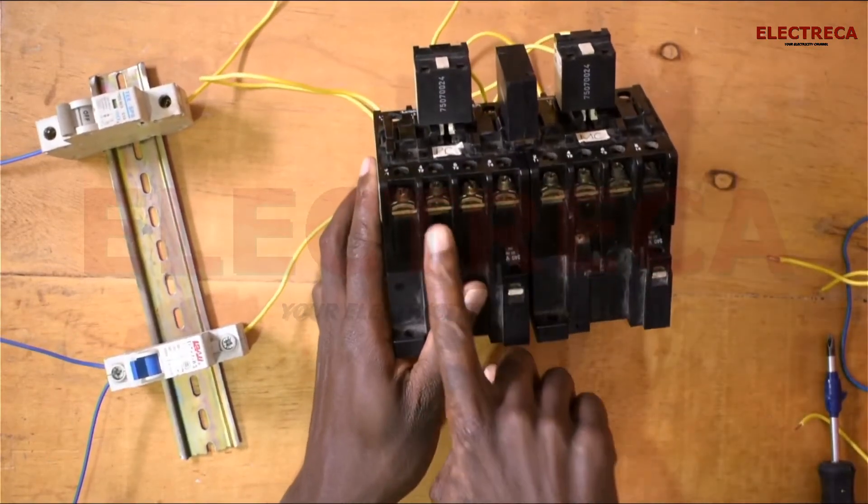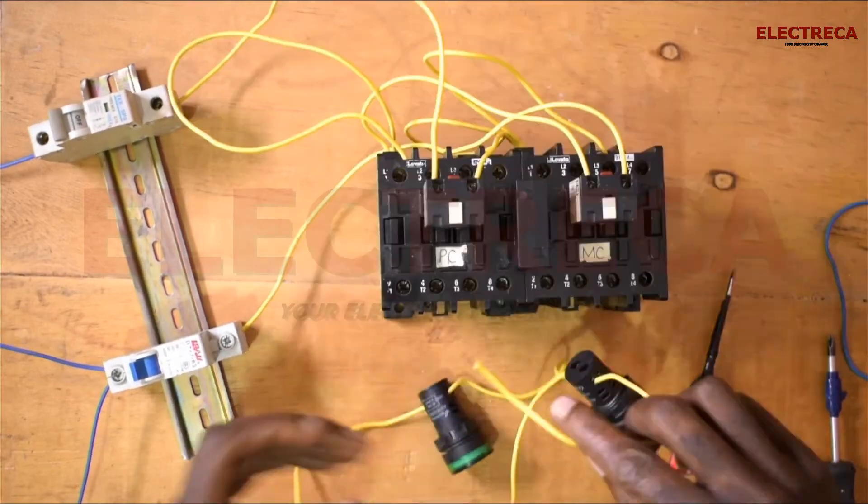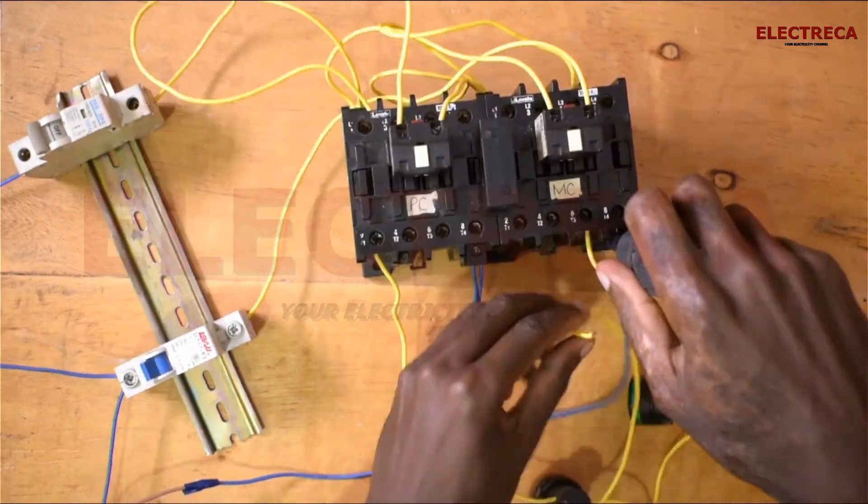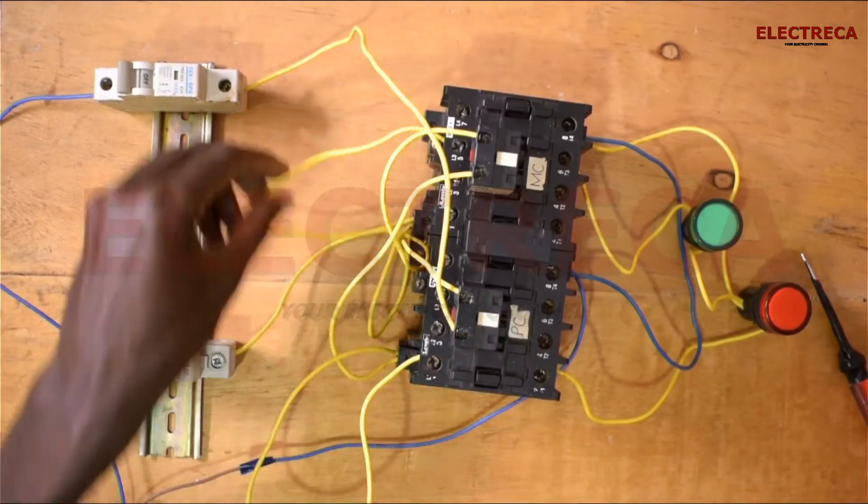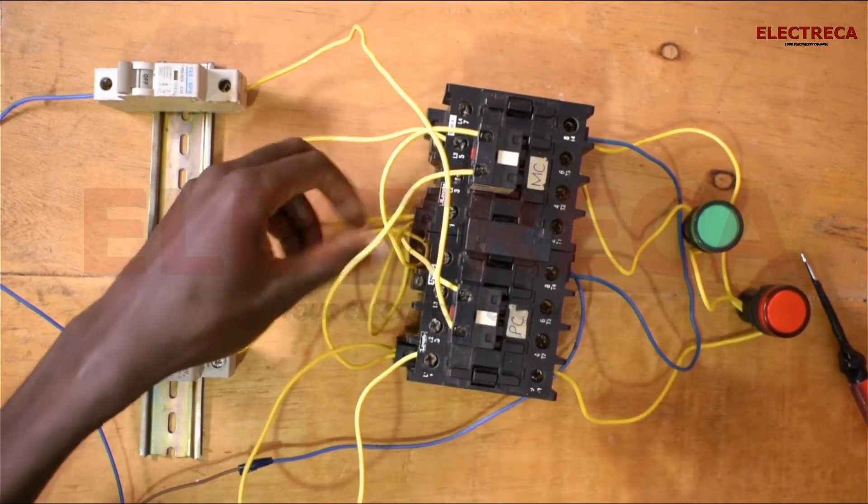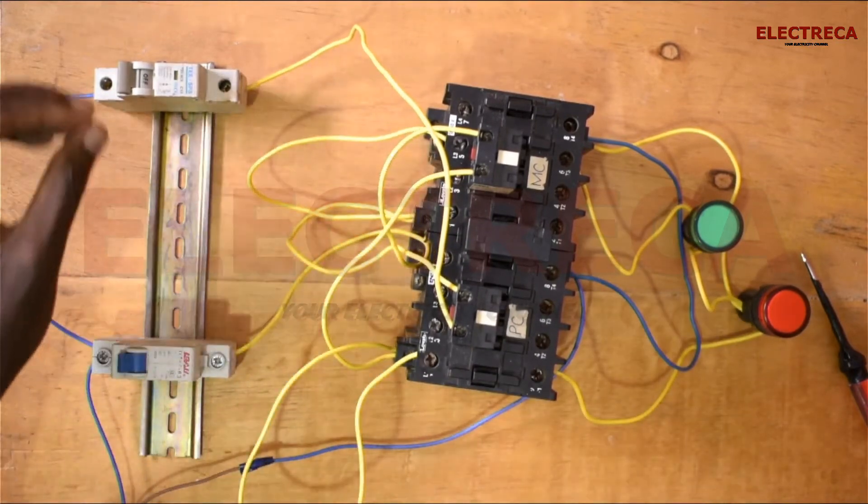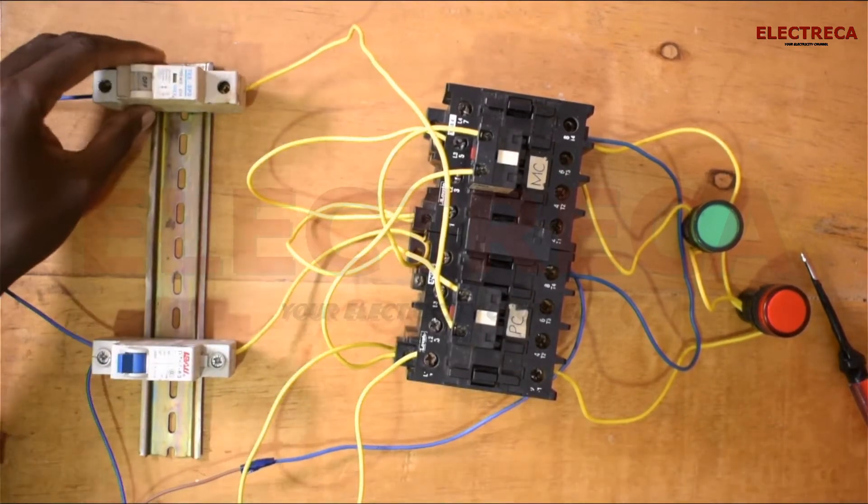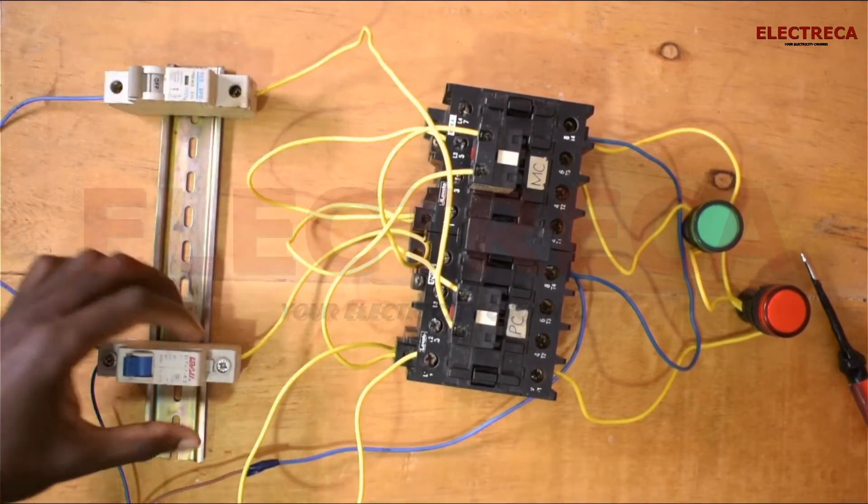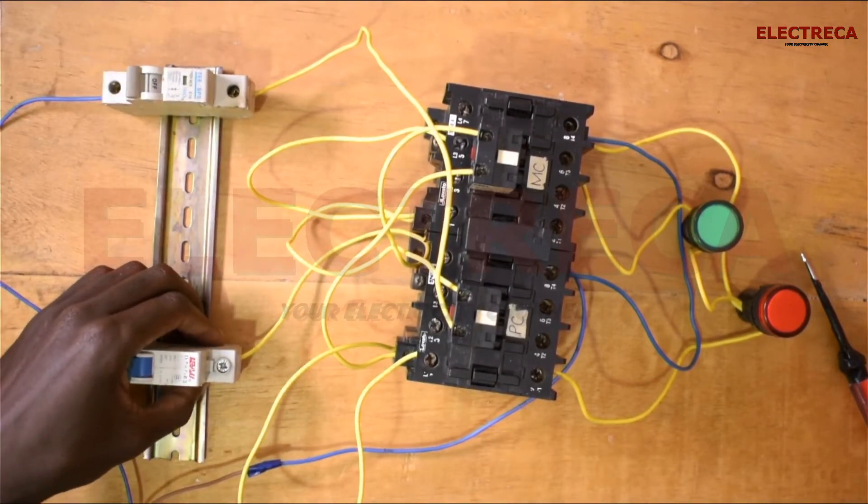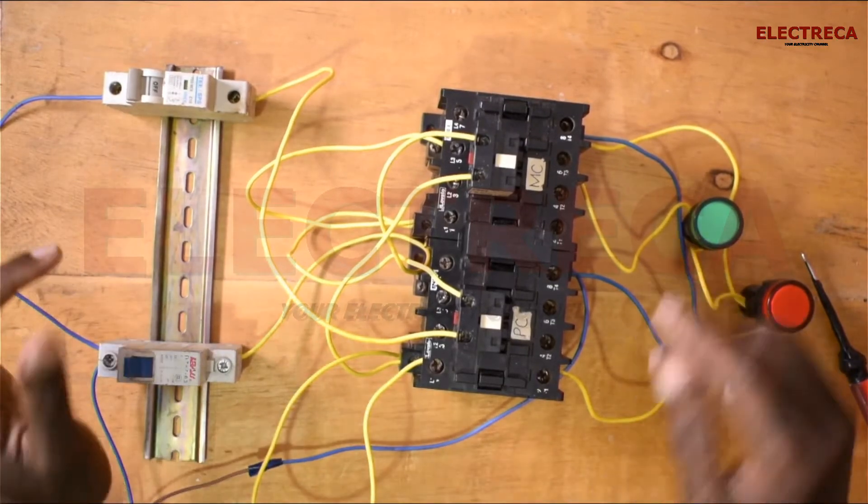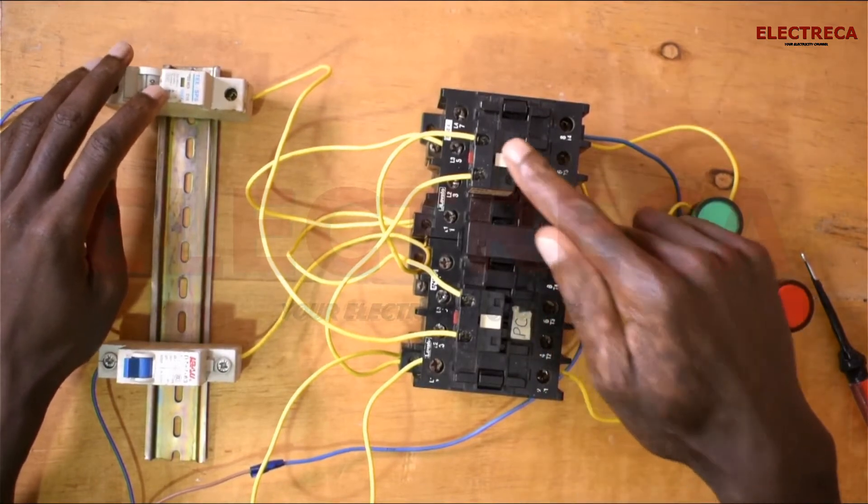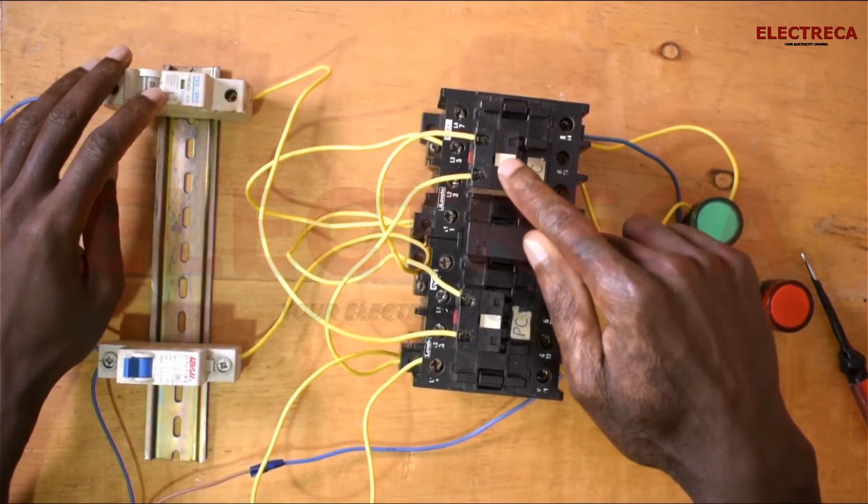So now we have to connect these lights. If you've been following through, this is what we've done. This is a breaker for the main contactor and this is a breaker for the backup contactor. We've used the auxiliary contact. That means for the main contactor to get energized, it has to go through the backup contactor then to the coil.